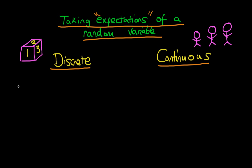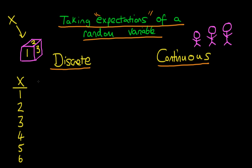In the discrete case, the example I'm going to use is that of throwing a fair die. A fair die is a cube which on each of its sides has a different number, where the numbers go from 1 to 6. Our random variable X in this case represents the value obtained from throwing a fair die, so X can take on one of six values: 1, 2, 3, all the way up to 6.